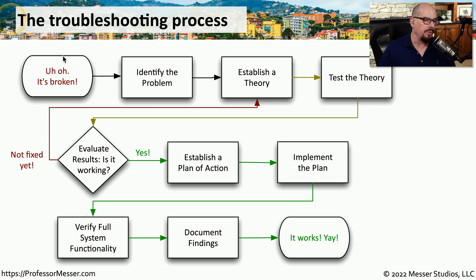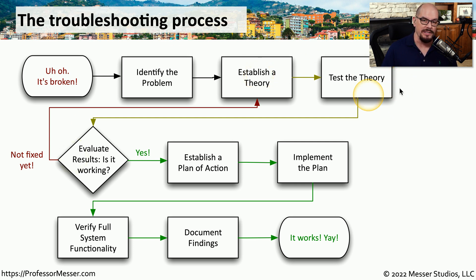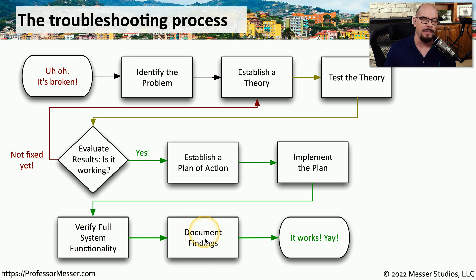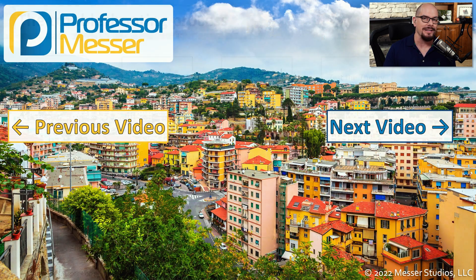So there's our troubleshooting process. We start with a system or application that's broken, identify and gather information about the problem, and then create a list of theories on what might be causing the issue. We step through every single one of these theories to see if it fixes the problem. If it does, we create a plan of action for implementing the fix in our production environment. Once we get a slot from the change control board, we implement the plan, verify that the system is working as expected, and document everything we did from the very beginning so that next time we know exactly the path to take.